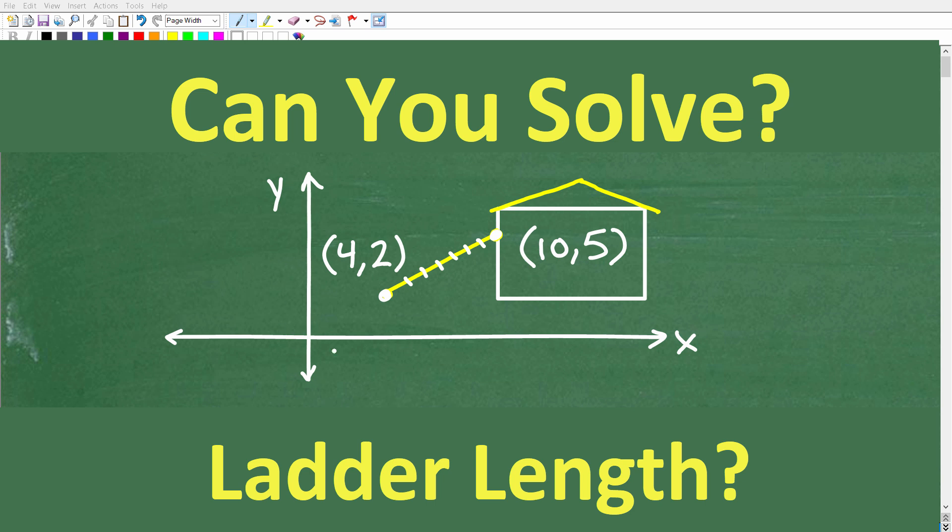Okay, so here we have a nice little XY plane and a sketch of a house. It looks like we have a little ladder leaning up against this house, and the question is we want to find the length of the ladder. In order to do that, we're going to have to use two pieces of information. We have this coordinate, which is the location of the top of the ladder, and this coordinate which is the location of the bottom of the ladder. So if you think you can figure this out, go ahead and put your answer into the comment section.